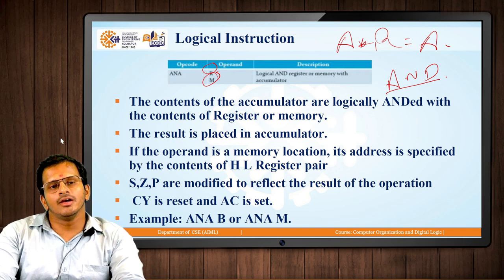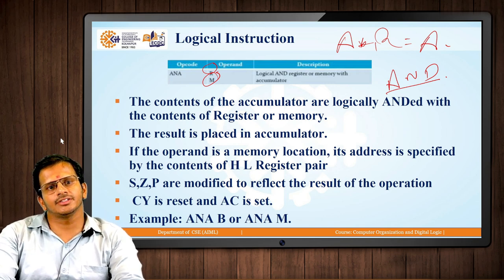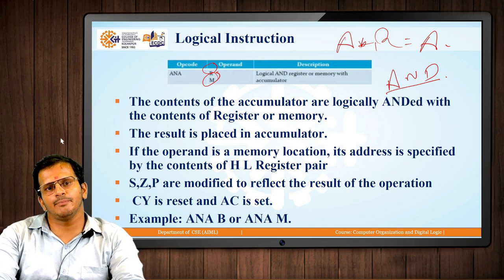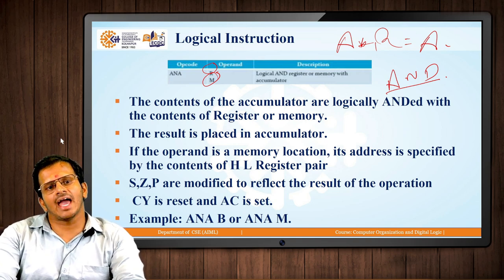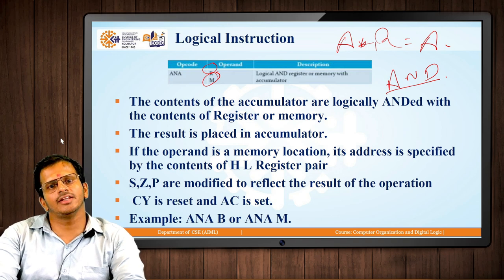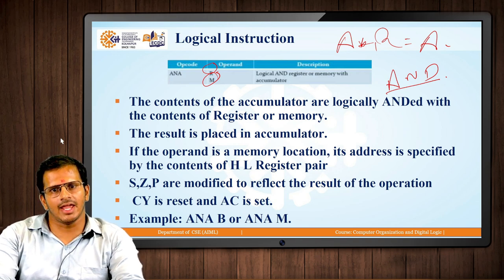Here the flag register is modified. The flag register bits S, Z, and P are modified through this operation. CY, the carry flag, is reset and the auxiliary carry is set. Examples of this instruction are ANA B and ANA M.